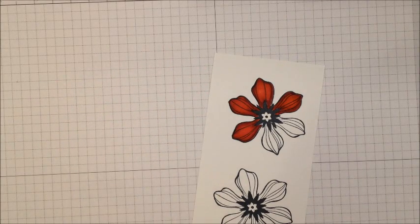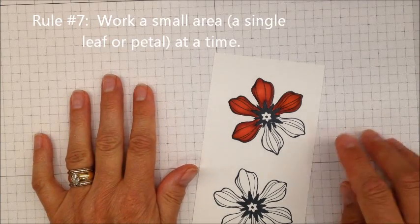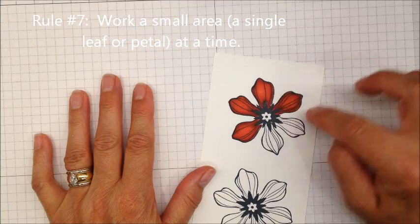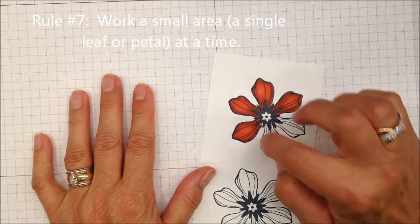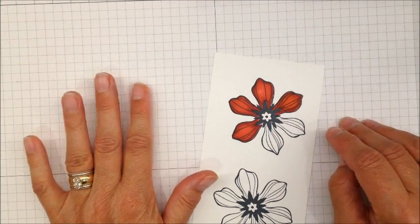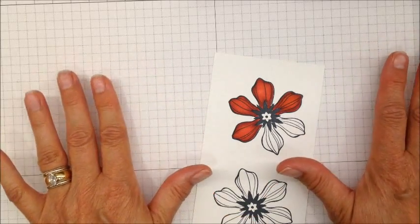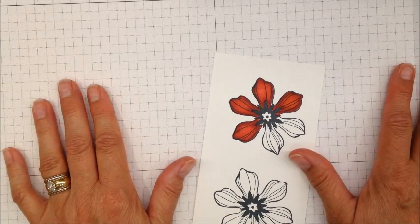And my seventh rule is you want to make sure that you do a small area at a time. You don't want to do the darkest color all the way around and then the medium. Do one leaf at a time and you'll find that it stays saturated, it's much easier to blend, and you're going to get prettier results.